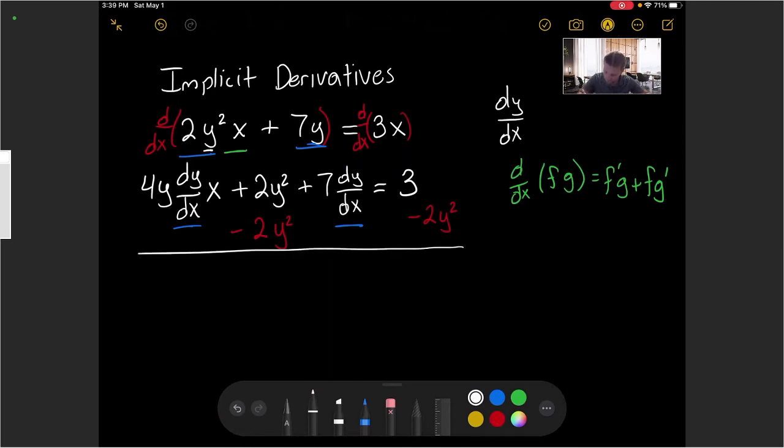So I'll have 4yx dy/dx + 7 dy/dx, and then equals 3 - 2y².